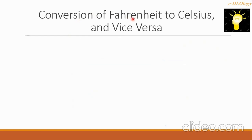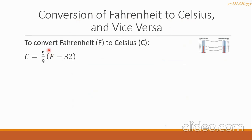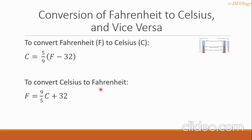Let's go to conversion of Fahrenheit to Celsius and vice versa. To convert Fahrenheit to Celsius, the formula is: C equals 5 over 9 multiplied by the quantity (F minus 32), where F is the Fahrenheit value. To convert Celsius to Fahrenheit, the formula is: F equals 9 over 5 multiplied by C, then plus 32.